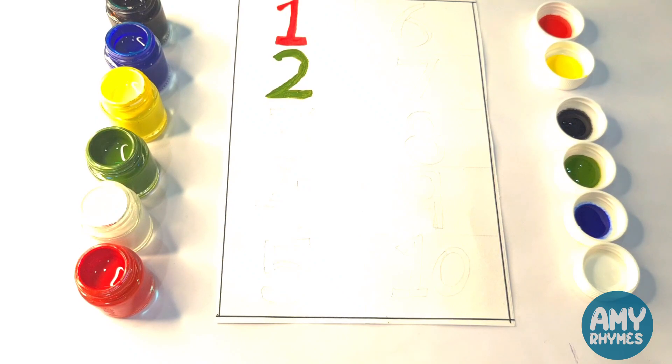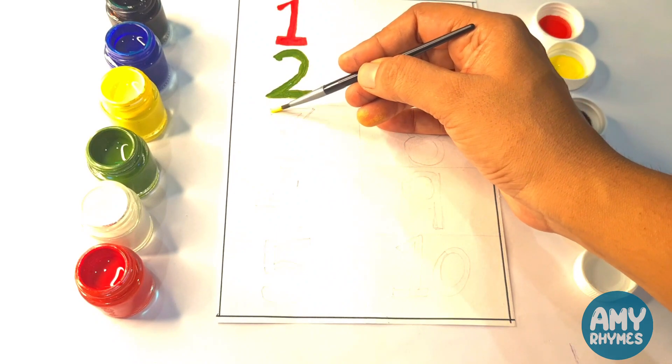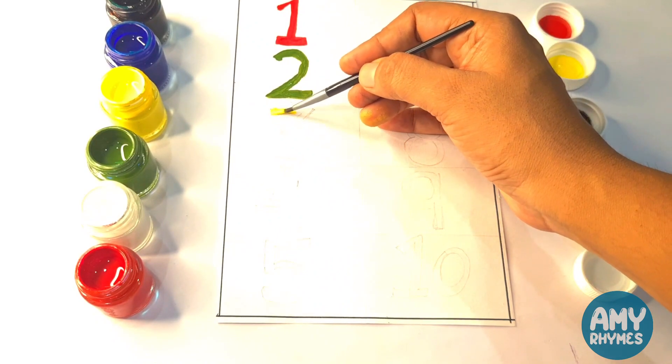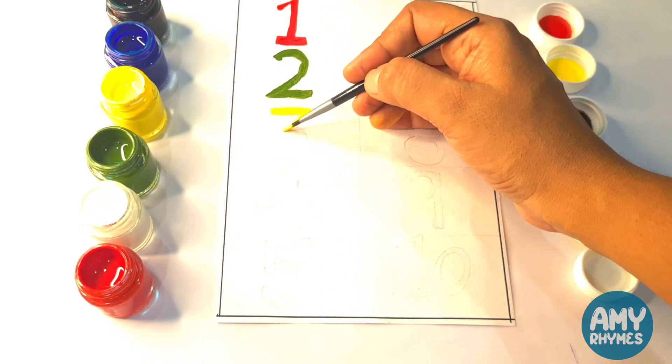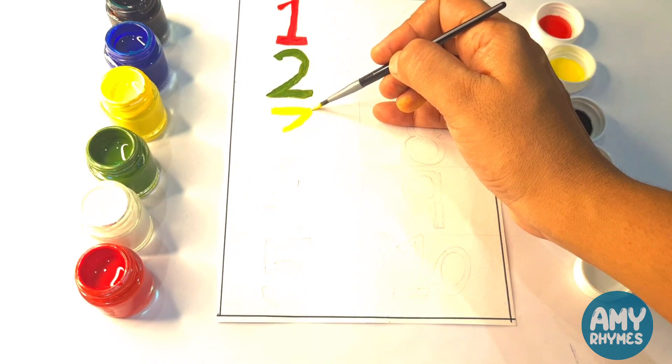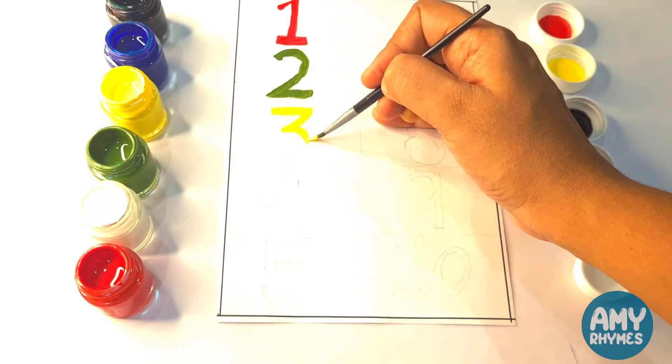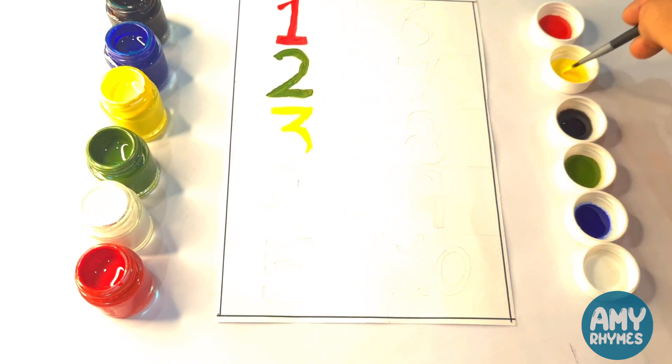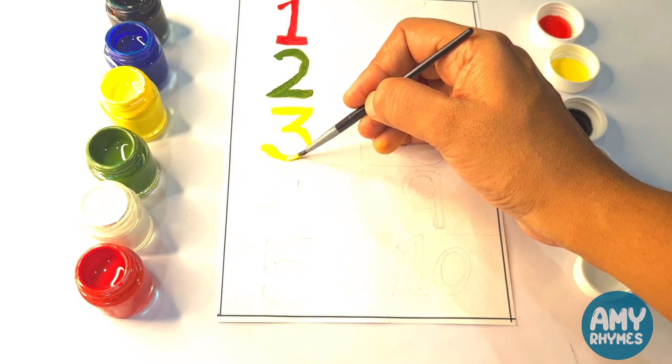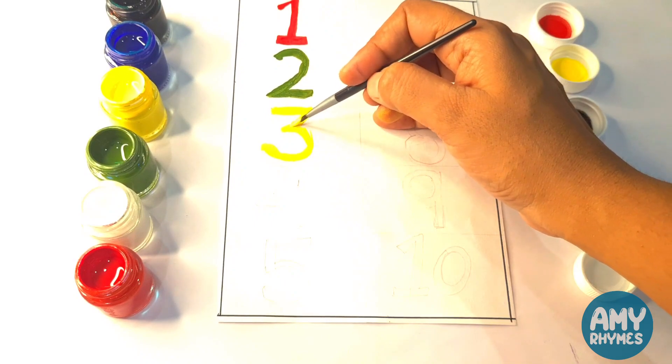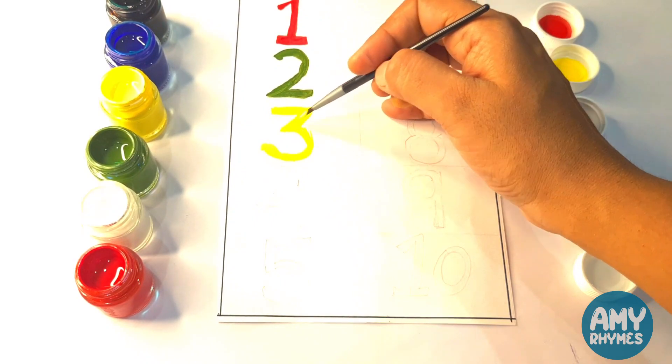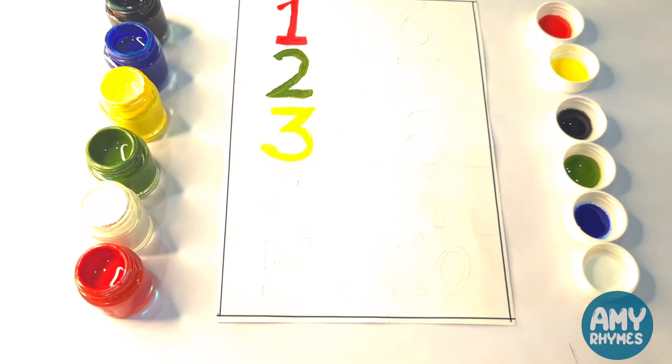Next is yellow color. Let's paint three with yellow color. Now it's done. Next is four.